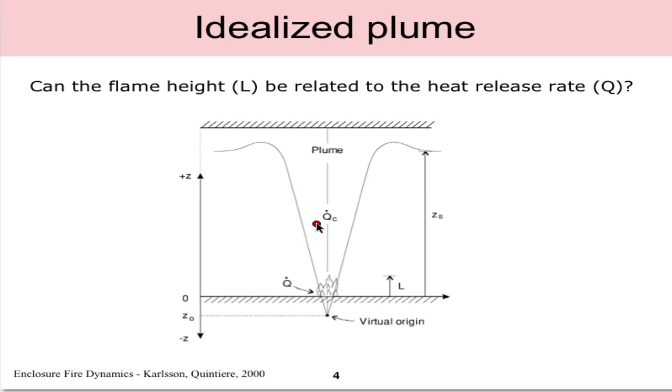We'll notice Qc which is the convective heat release rate denoted here whereas Q is denoted here for the total heat release rate and we'll see why that's important in a second. One other thing to note in this diagram is that the virtual origin or the point source is located below the floor and this is because if we have a finite burning area at the floor surface the virtual origin of the inverted cone will actually exist below the floor and the cone expands upwards to match that burning area.